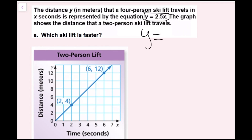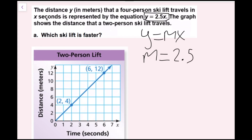We can see right away that 2.5 is the number being multiplied by x, so my m value, my slope, equals 2.5. Since y is the amount of meters and x is the amount of seconds, I go 2.5 meters in one second.